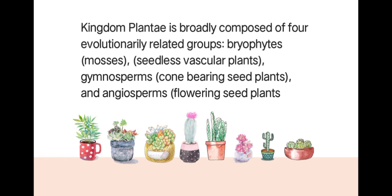The kingdom Plantae is broadly composed of four evolutionarily related groups: first, the bryophytes or mosses, which are seedless vascular plants; second, gymnosperms, the cone-bearing seed plants; and angiosperms.